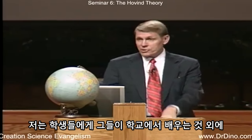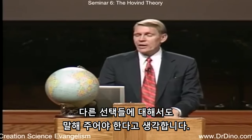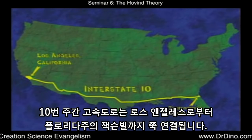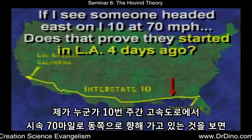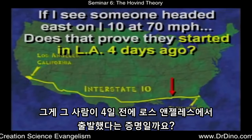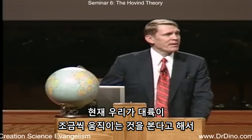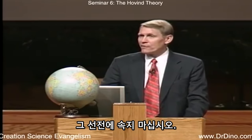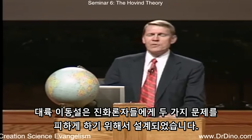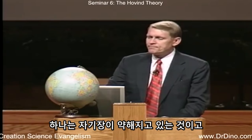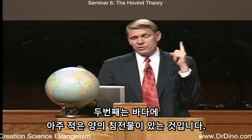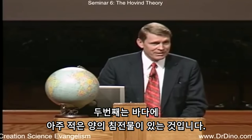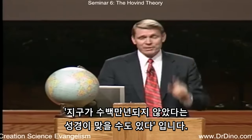Students should be told there are other options than what they're being taught. If I see somebody headed east on Interstate 10 at 70 miles per hour, does that prove they started in Los Angeles four days ago? No — they might have just got on at the last exit. Just because we see continents moving a little today does not prove anything long-term historically. The Continental Drift Theory is designed to avoid two problems for evolutionists: the magnetic field is getting weaker, and there's very little sediment in the ocean. Another explanation might be that the Bible is right and the earth is not billions of years old.